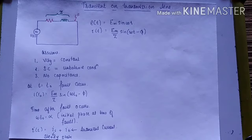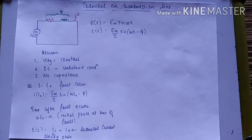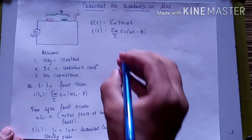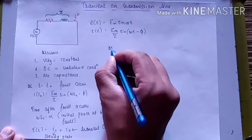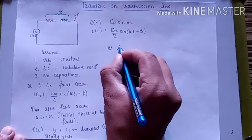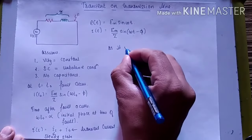This is an inductive circuit because it has resistance and inductance. Therefore, the transient current decays with a time constant τ = L/R.